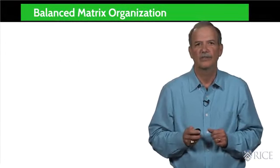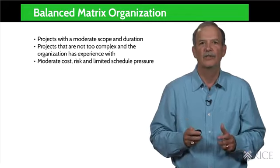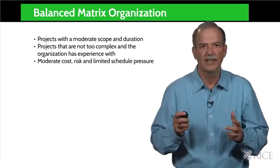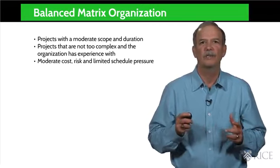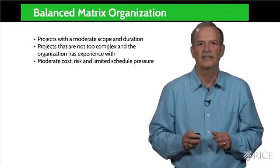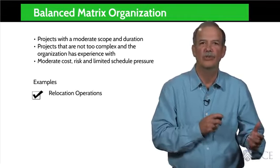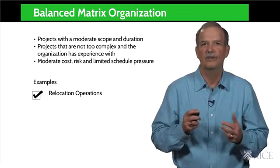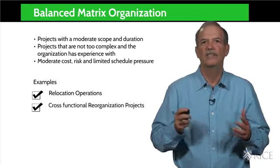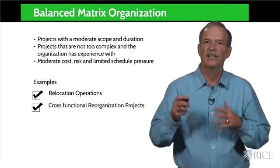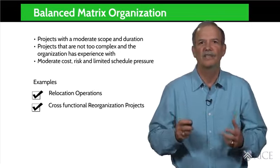The balanced matrix organization — where is it used? These projects tend to be larger in scope and more complex than those that successfully use the functional or weak matrix organizations. They are small to moderately sized and slightly more complex, requiring more coordination to be successful. Typically, the organization has some experience with these projects and the cost and schedule pressure is not intense. Examples include relocation operations, where the effort requires coordination to make sure it comes off in a coordinated fashion, but each function needs to control the move of its own people. Reorganization projects across multiple functions similarly need a central coordinating function, yet much of the work needs to be done within the functions.